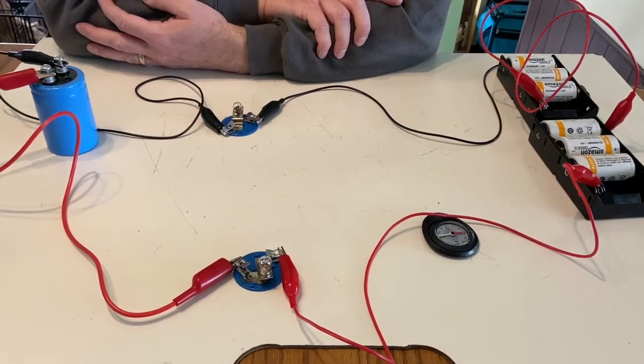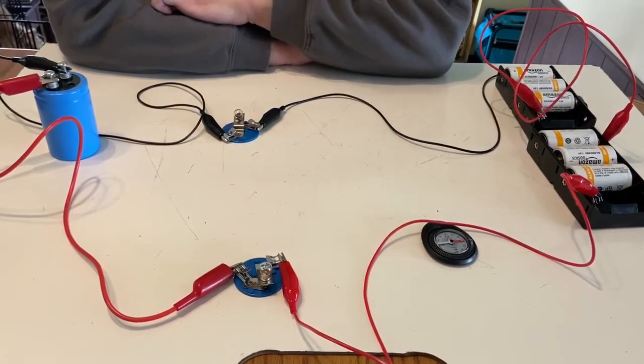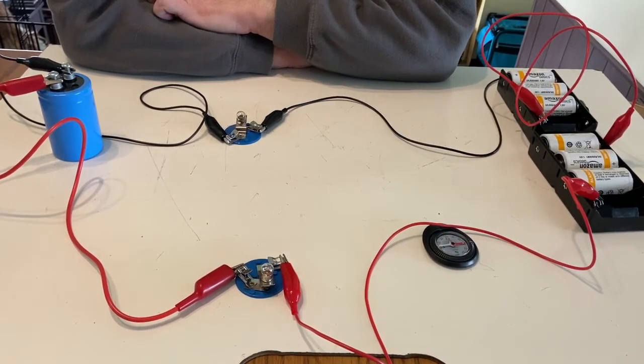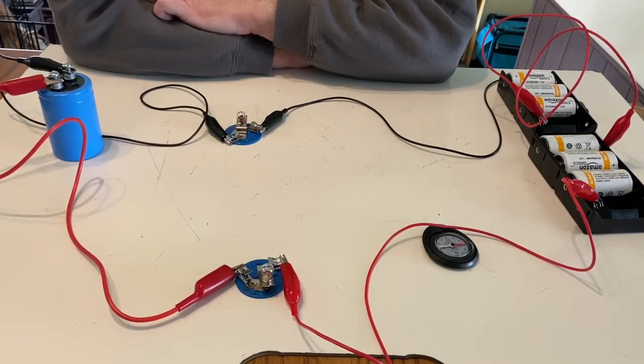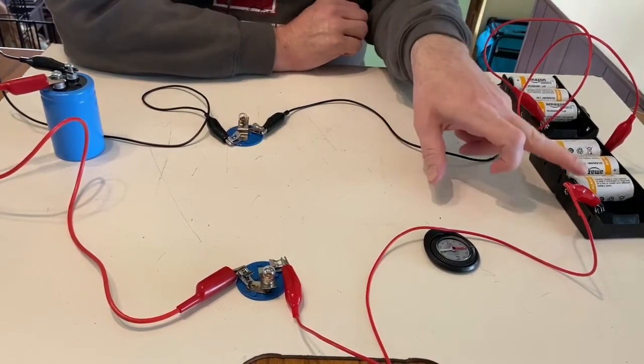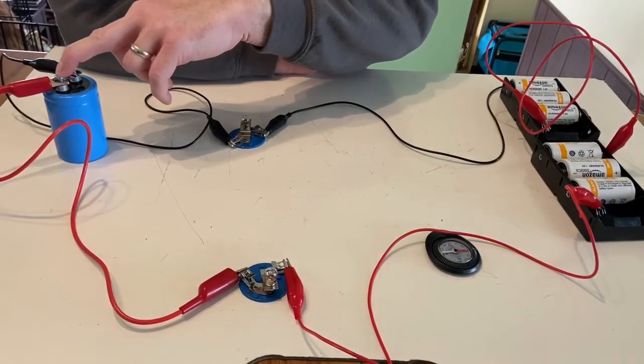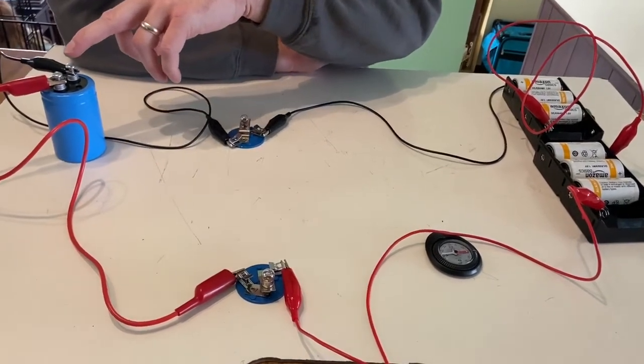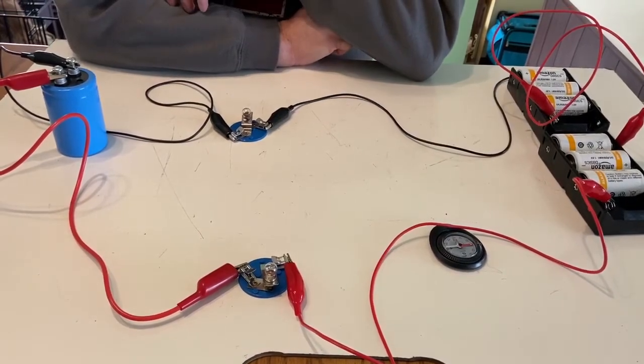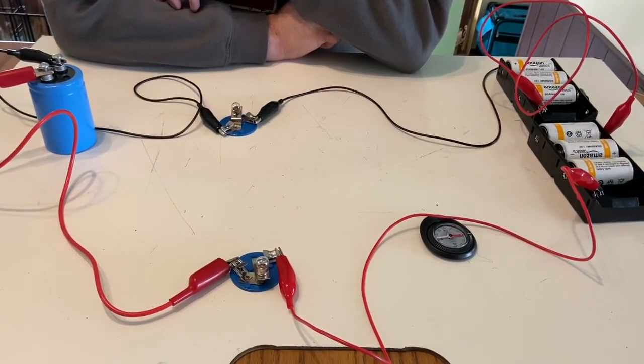Now when we added that second three cell battery we saw the same direction of compass deflection and the same direction of compass deflection is telling us that charge flowed again in the same direction. So with the three cell battery we had charge flow from positive terminal of the battery to the positive what becomes the positive plate of the capacitor and then charge flows from the negative plate of the capacitor back to the negative end of the battery and with the additional battery we get charge flow in the same direction.